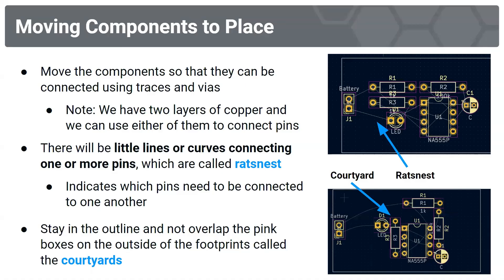To move components into place, arrange them so they can be connected using traces and vias. We have two copper layers available, but today we'll mainly use the front copper layer. The thin lines connecting pins are called the rat's nest — they indicate which pins need to be connected. Make sure to stay within the outline and not overlap the pink courtyard boxes around footprints.